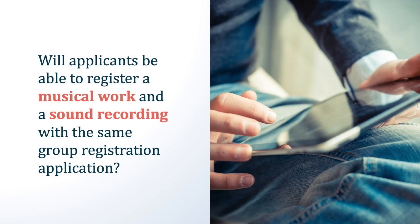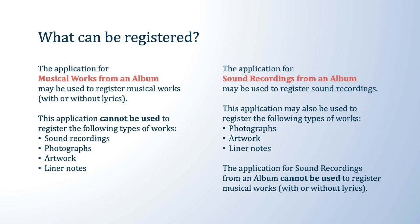Applicants will not be able to register a musical work and a sound recording with the same group registration application. The office created one application for musical works and a separate application for sound recordings. To register a group of musical works, you must submit the online application for musical works from an album — this application can only be used to register musical works, either with or without lyrics, and cannot be used to register sound recordings. To register a group of sound recordings, you must submit the online application for sound recordings from an album, which may also be used to register photographs, artwork, or liner notes that were first published on the same album.